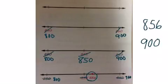Rounding 856 to the hundreds place using a number line gives us 900 — and you would get 900 using any rounding method. You can see the visual representation right here on the number line. Write down any questions you might have about rounding using a number line and we can talk about those when you come to class.